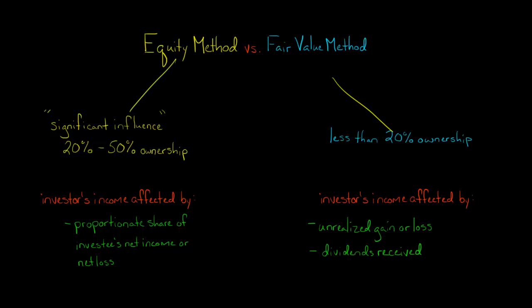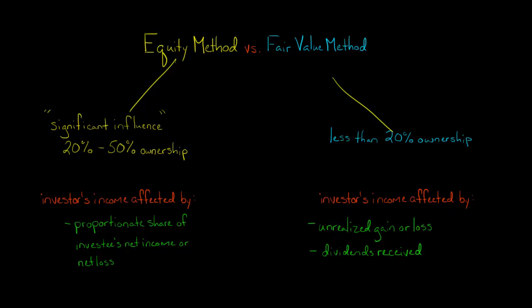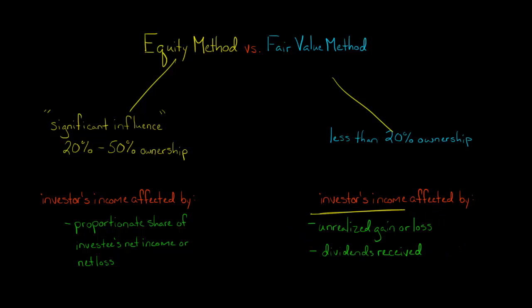The accounting matters because under the fair value method, if you own less than 20% of the company you're invested in, the investor's income is going to be affected by any unrealized gains or losses on the stock of the investee. If the stock price goes up and they haven't sold, they'll have an unrealized gain; if it goes down, an unrealized loss. Also, if the investor receives dividends from the investee, they're going to recognize dividend revenue. So unrealized gains and losses and dividends received will affect the investor's net income.